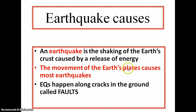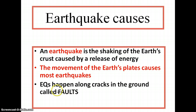So that is tectonic plates. Our earth consists of 7 major tectonic plates and some minor tectonic plates. The movement of those plates will cause earthquakes. Earthquakes happen along the faulty region.